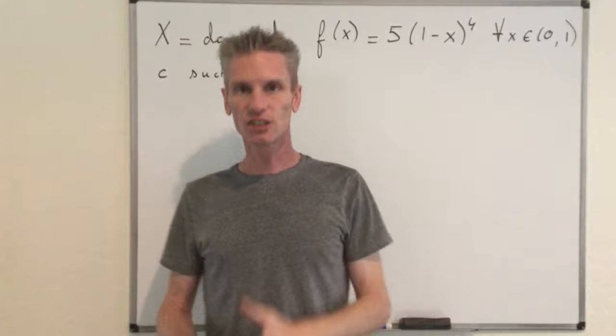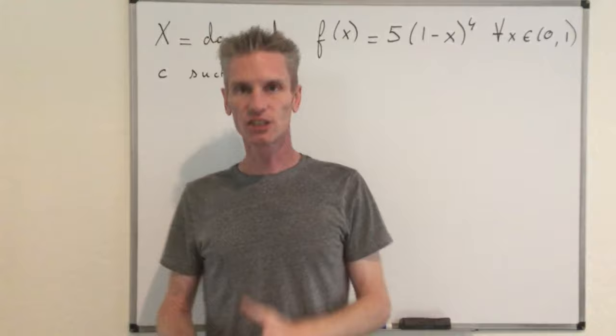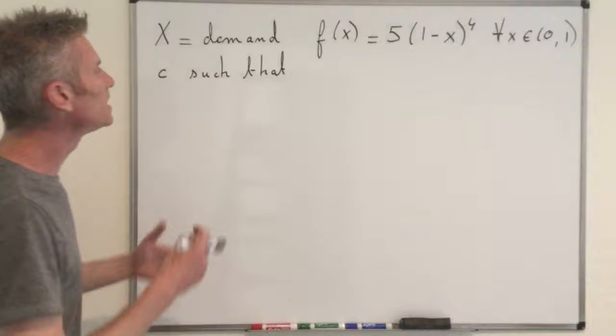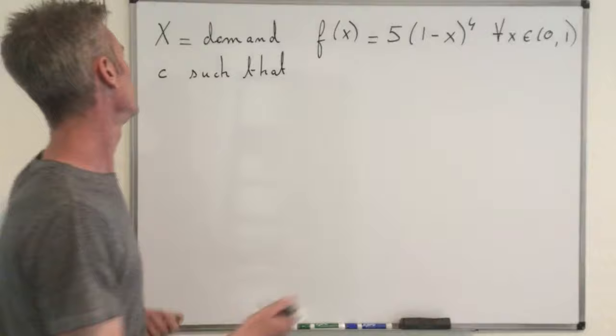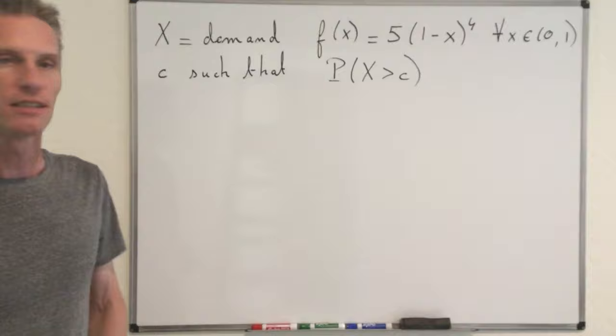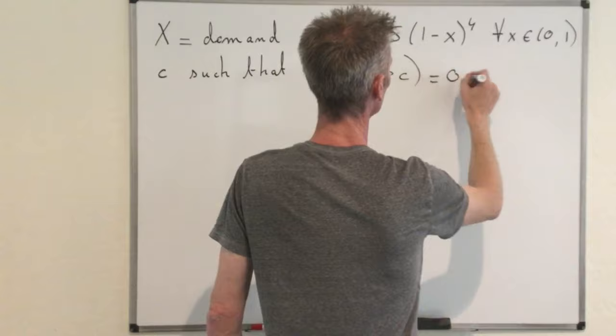And the goal is to find C such that the probability of the supply in gasoline being exhausted is equal to 0.01. So beyond all those complicated sentences in English, in fact, what we really want to do is find C such that the probability that X is larger than C only happens 1% of the time. So that means this probability should be equal to 0.01.